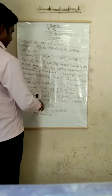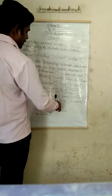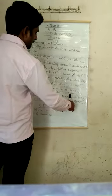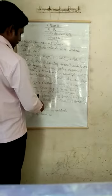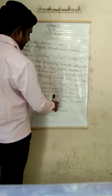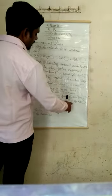A is lungs, B is brain, C is liver, D is heart. Lungs means 'phephde', brain means 'mastishk', liver means 'yakrit', heart means 'dil'.